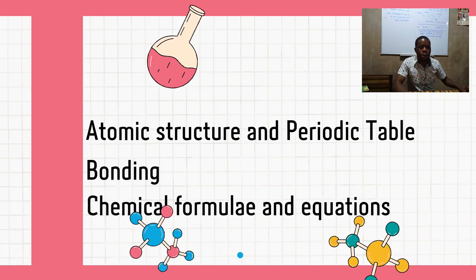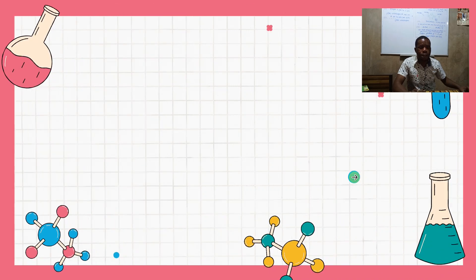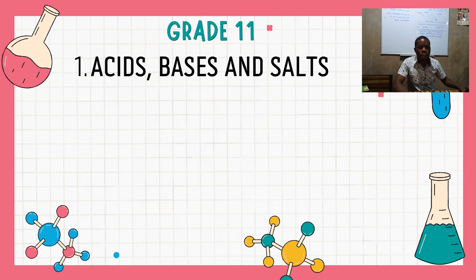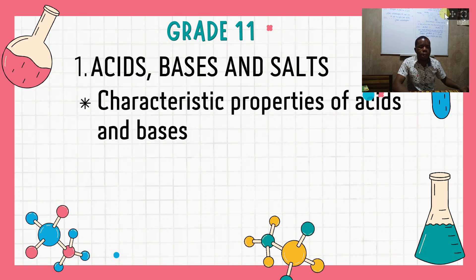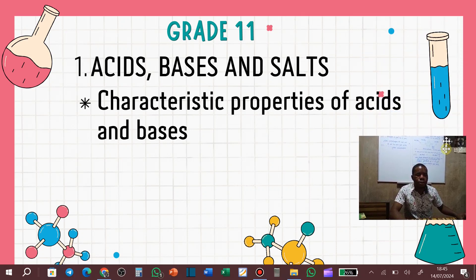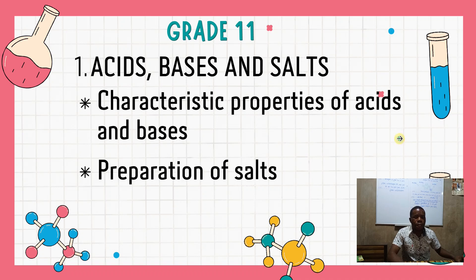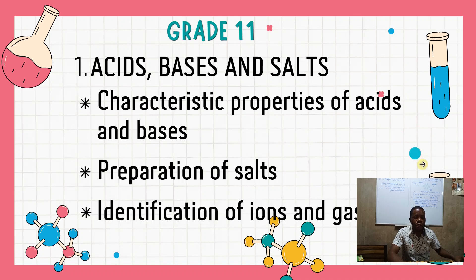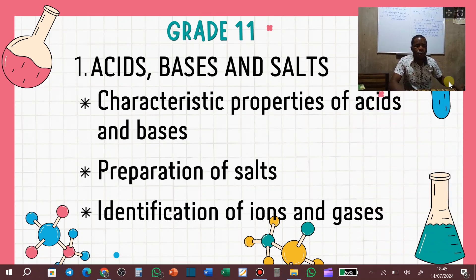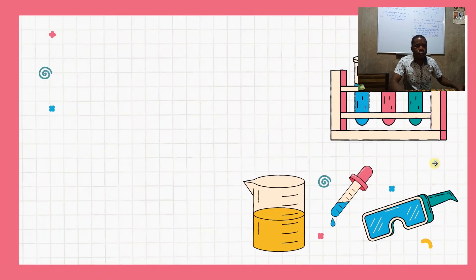Now we move to Grade 11 topics that do not miss. The first one is acids, bases, and salts. This topic does not miss. Under it you'll find subtopics such as the characteristic properties of acids, preparation of salts, and identification of ions and gases.